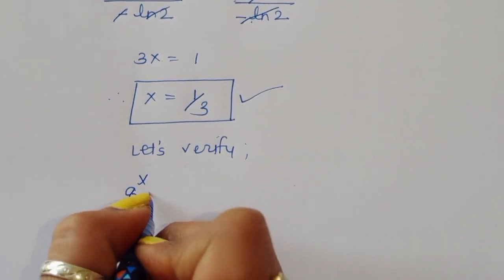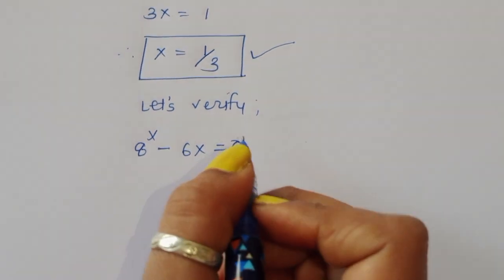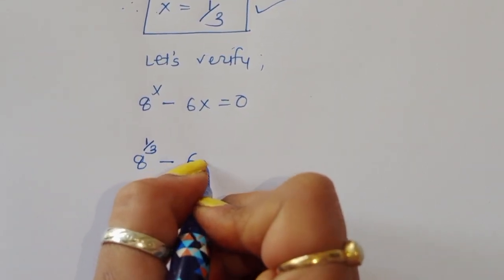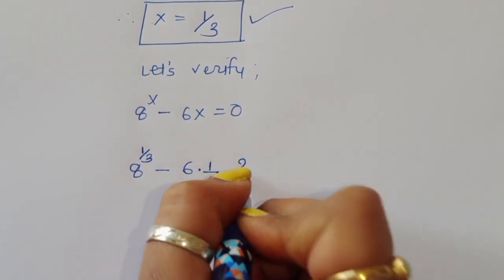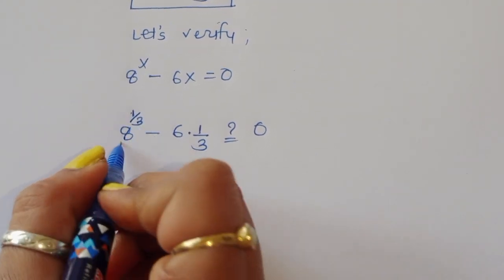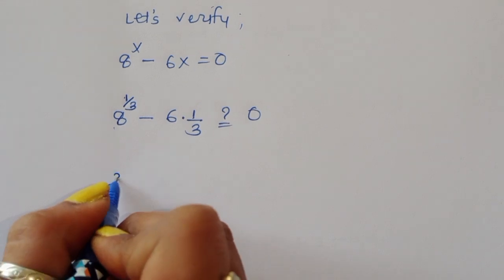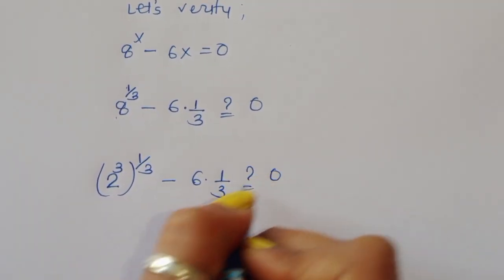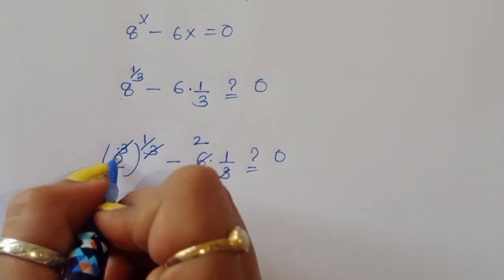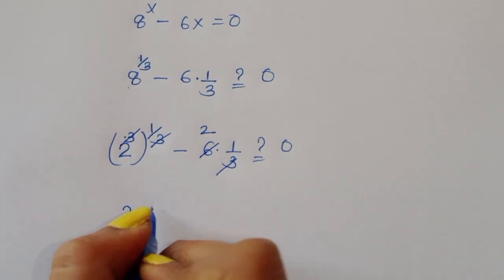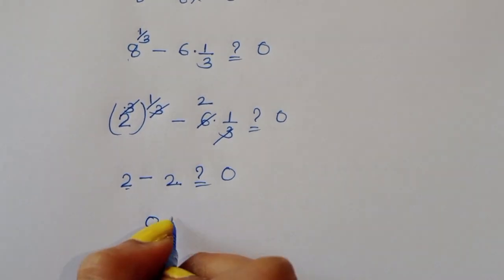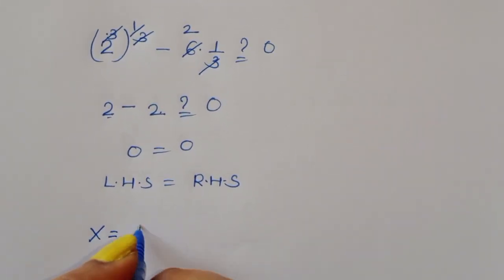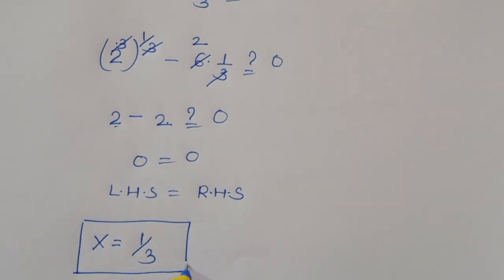Now let's verify. We check: 8 power x minus 6x equals 0, with x equal to 1 upon 3. So 8 power (1/3) minus 6 times (1/3). We write 8 as 2 power 3, so (2 power 3) power (1/3) minus 2. The 3 and 1 upon 3 cancel giving 2 power 1, which is 2. So we get 2 minus 2, which equals 0. LHS equals RHS, so x equals 1 upon 3 is the correct solution. Thank you.